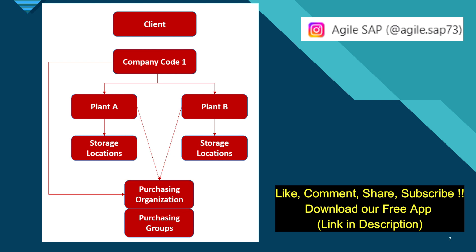If you look at this structure, this is the client. The client has to be assigned to the company code, and the company code has multiple plants. So this combination is one to many — one company code can have multiple plants.